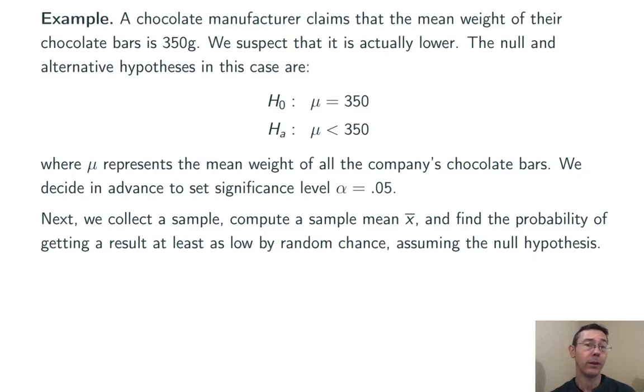Then we go out and we collect our sample. We're going to compute a sample mean, x-bar, and then find the probability of getting results at least as low, just by random chance, assuming the null hypothesis that the mean weight of all the chocolate bars is 350 grams.